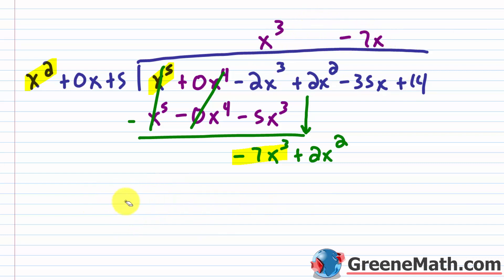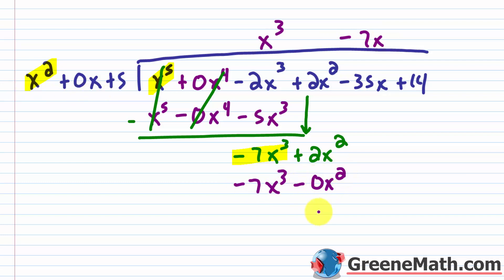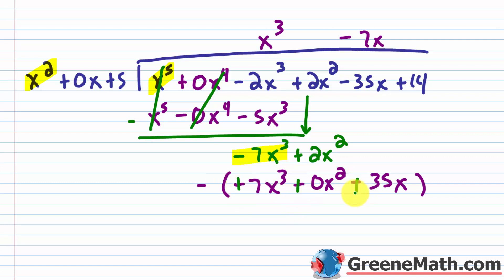Now the multiplication step: negative 7x times x squared is minus 7x cubed. Negative 7x times 0x gives minus 0x squared. And negative 7x times 5 is negative 35x. Now wrap it in parentheses with a minus in front to remind yourself to change all the signs.